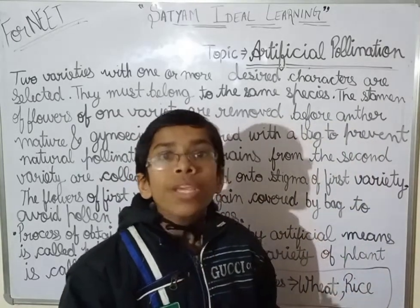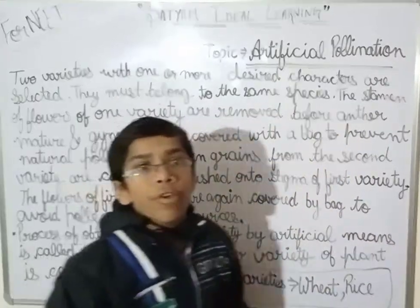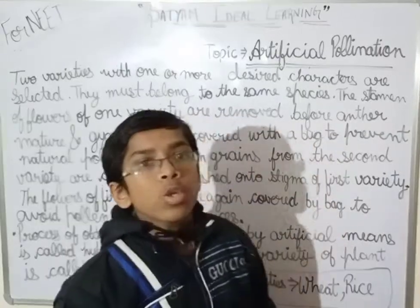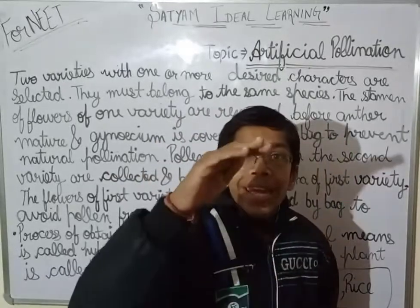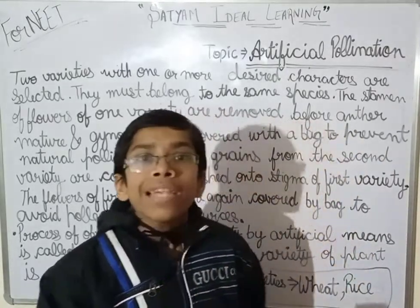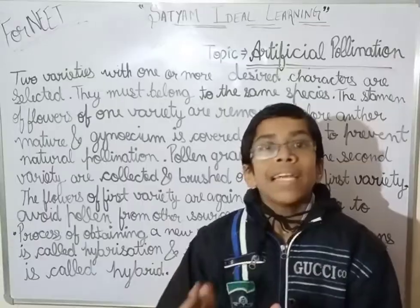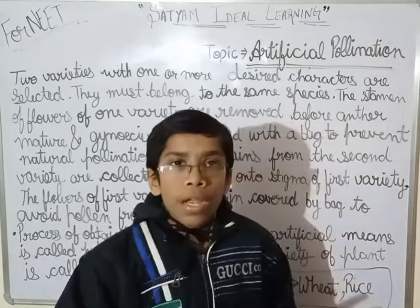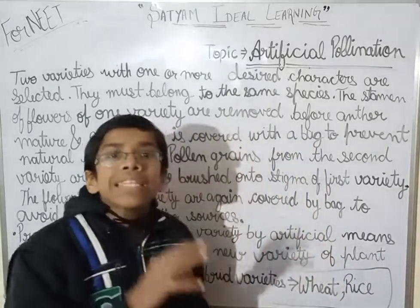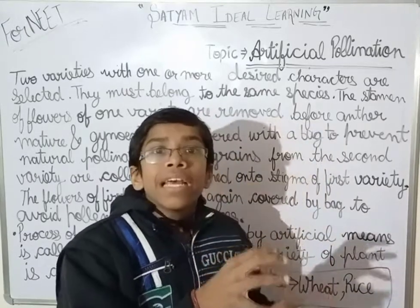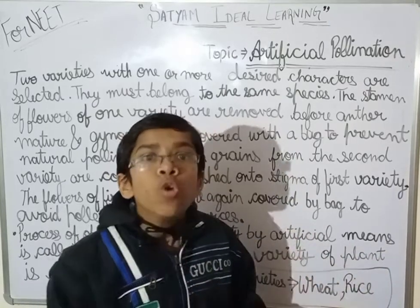For example, if there is a plant which is resistant to a certain disease but the yield is very low, and another plant has high yield — we want to combine the disease-resistant character with the high-yielding character so that a new variety of plant is formed.